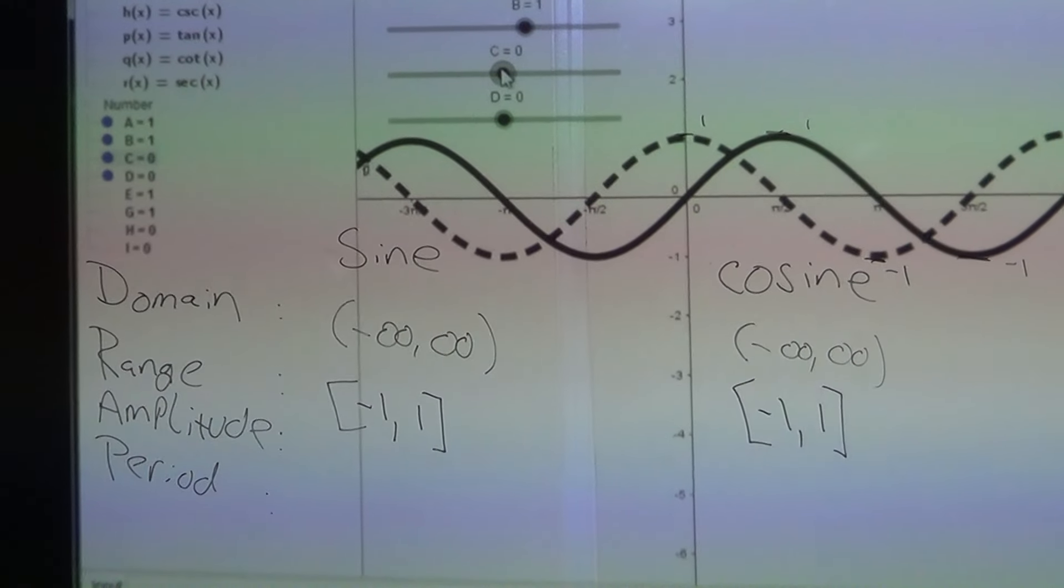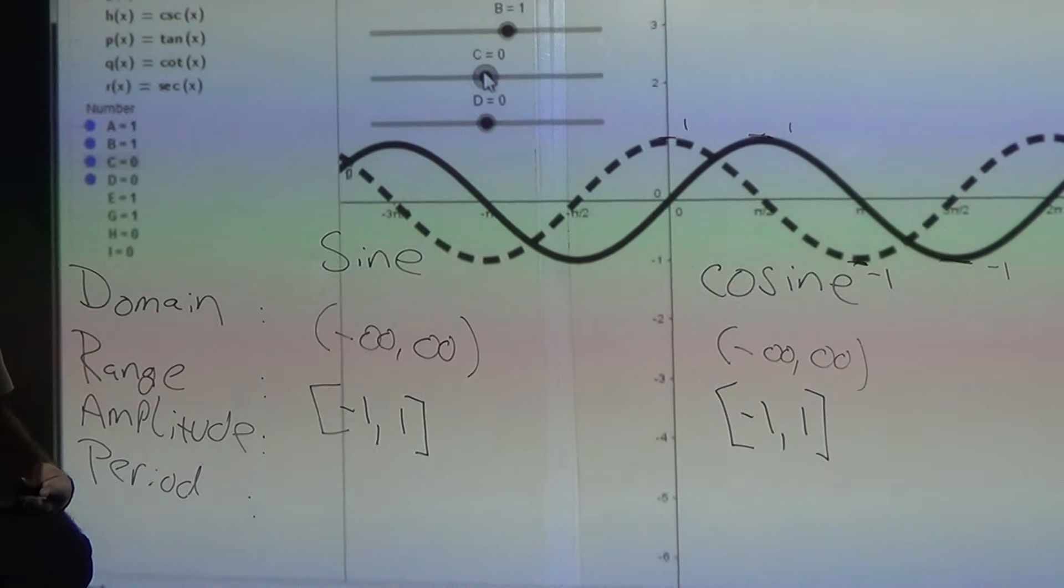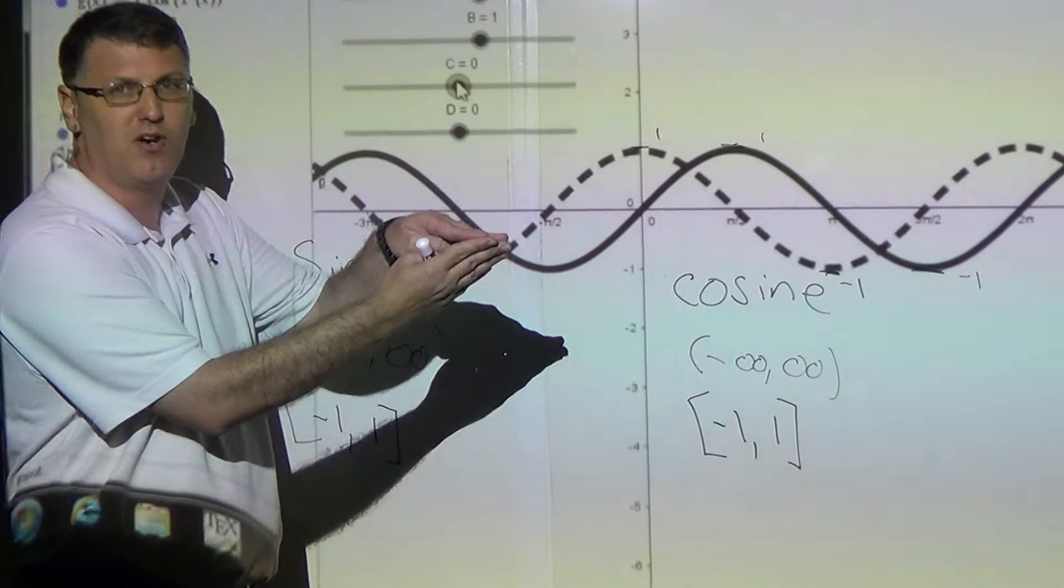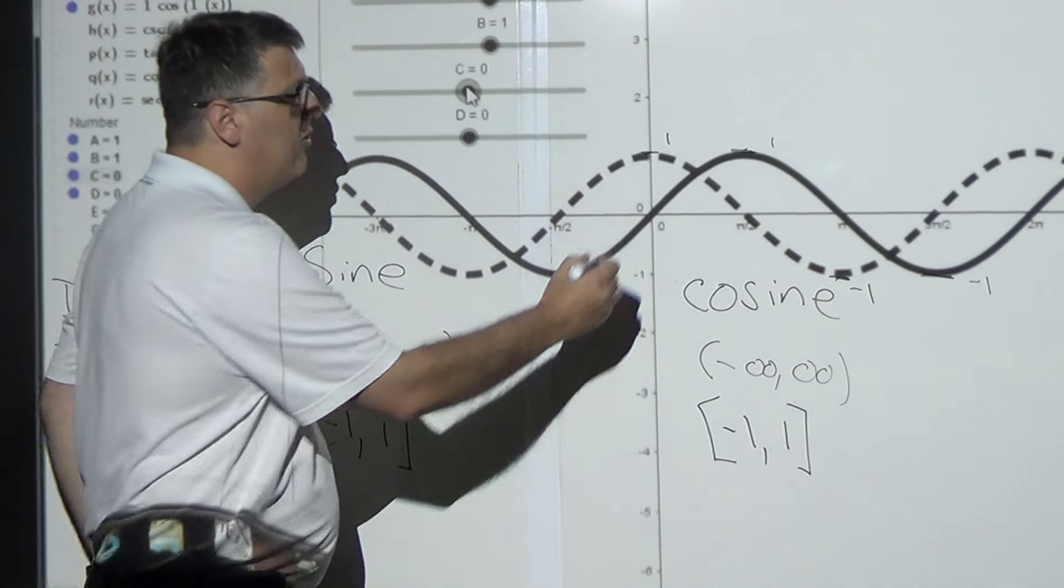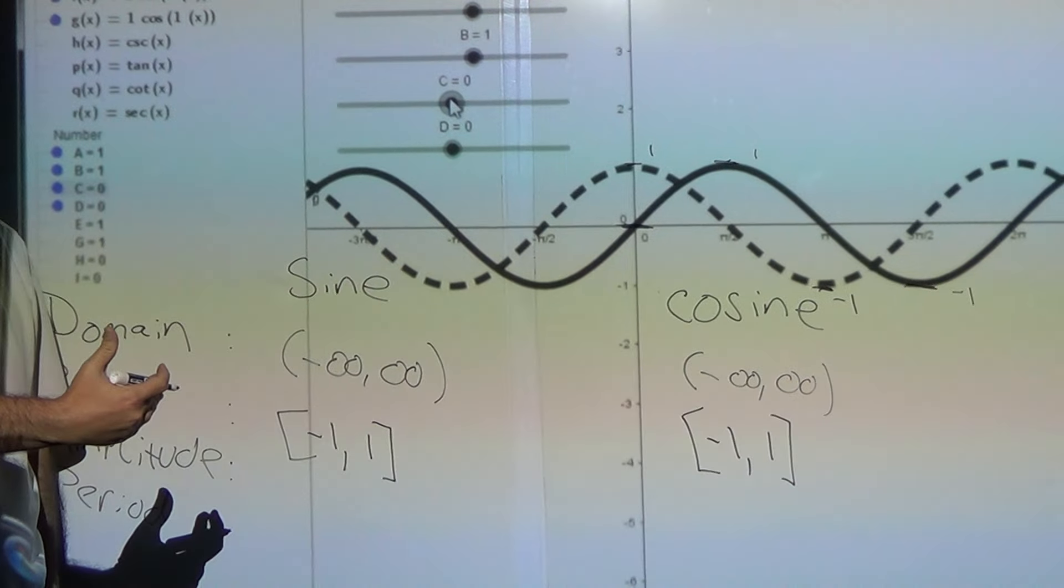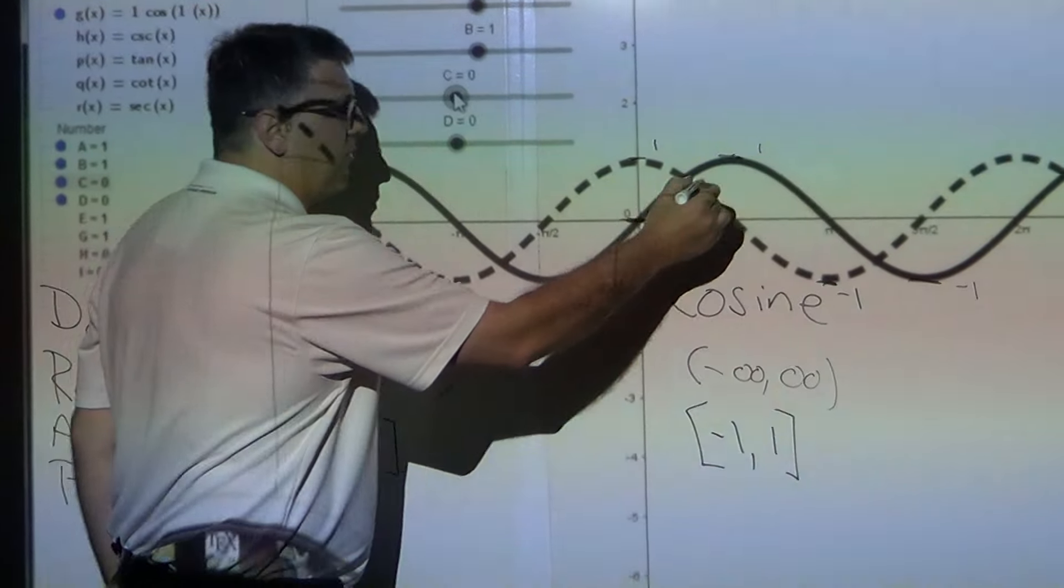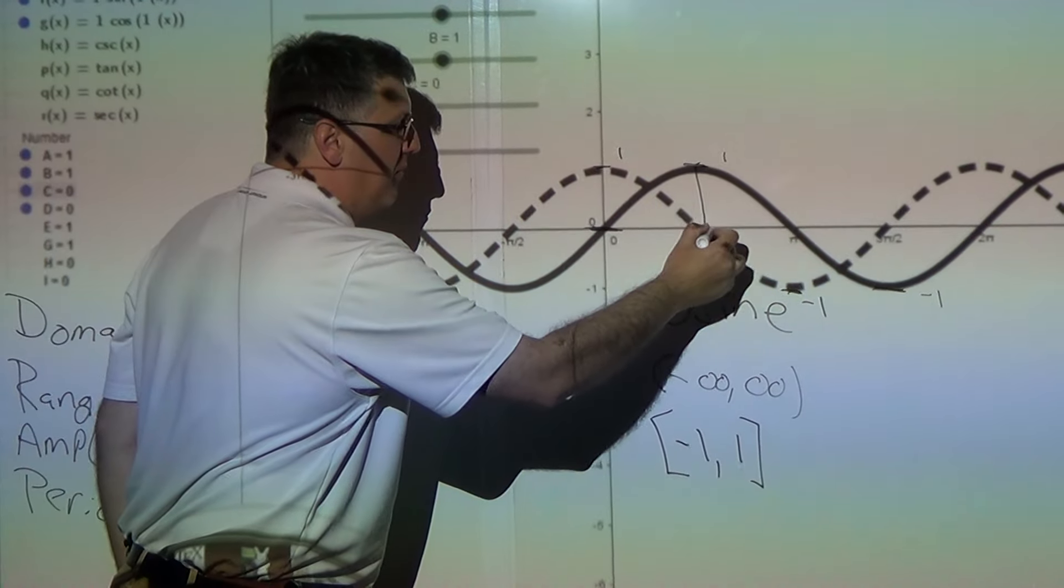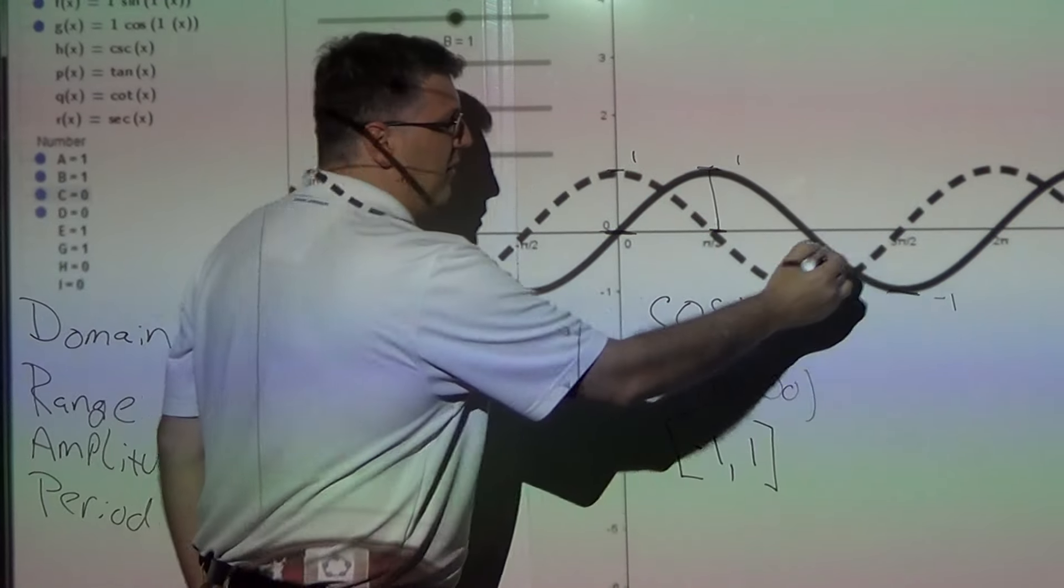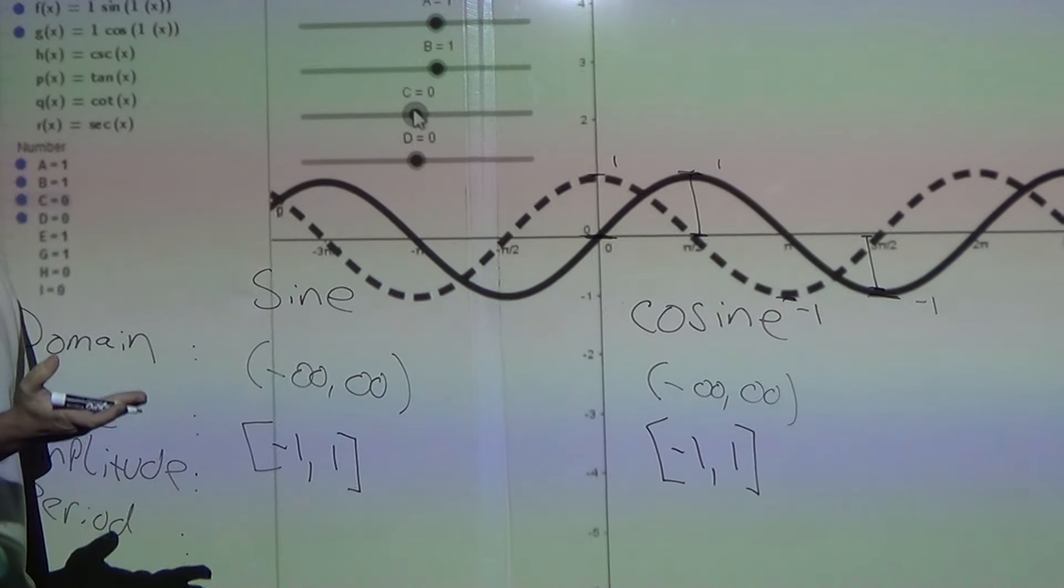The next thing we have to talk about is the amplitude. Amplitude is for sinusoidal waves. What it does, it measures how tall it is. But it doesn't measure how tall the entire thing is. You want to go from your midpoint. And we'll deal with the equations later to find where the middle of the equation is to be able to find amplitude. We just simply want to know, how far is it from the middle of the wave to its maximum, or from the middle of the wave down to its minimum. It's going to be the same number because you're going to divide that wave in half.